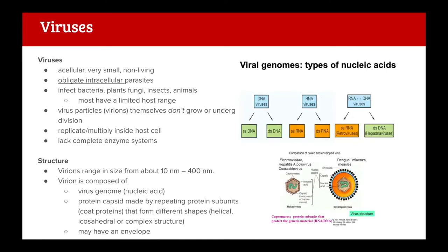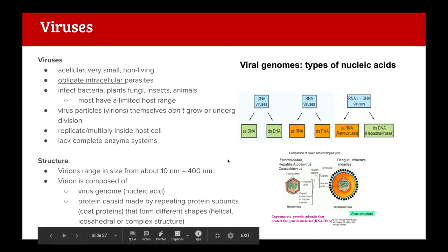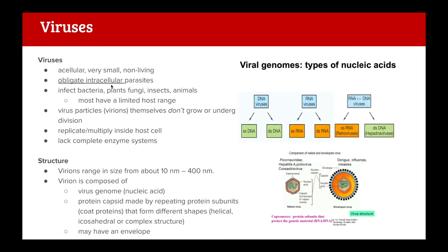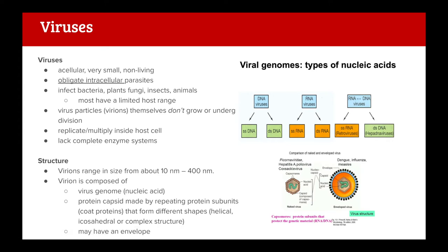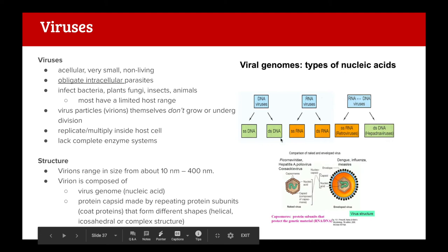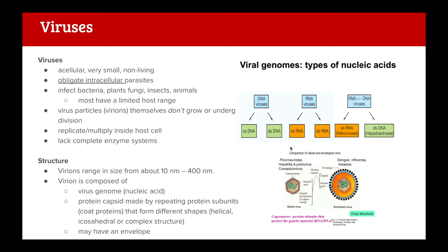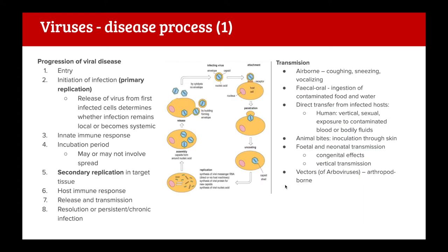Moving on to viruses: they are acellular, very small, non-living, obligate intracellular parasites - they can't replicate without host cells. They infect many types of organisms but most have a limited host range. Virions themselves can't divide; they don't have their own enzyme systems. Their structures range from 10 to 400 nanometers. They're composed of a genome and a protein capsid in different shapes, and may or may not have an envelope. Viral genomes can be DNA or RNA, single-stranded or double-stranded, and some are retroviruses.